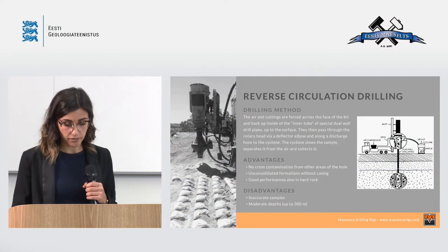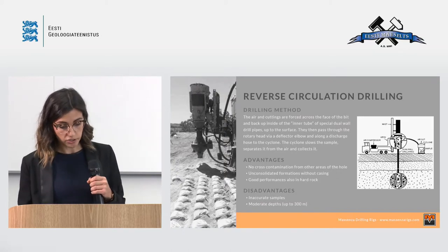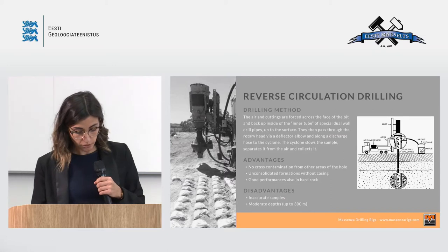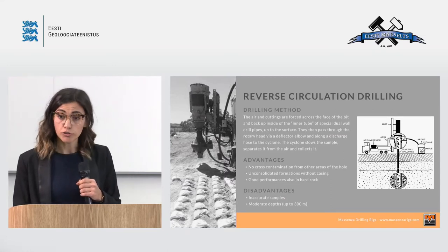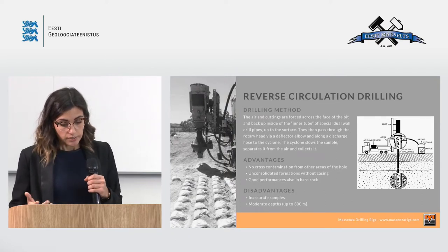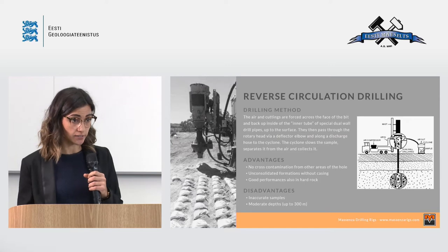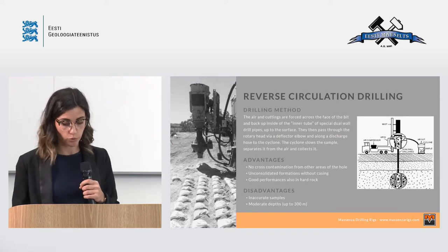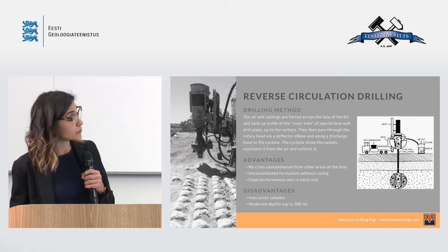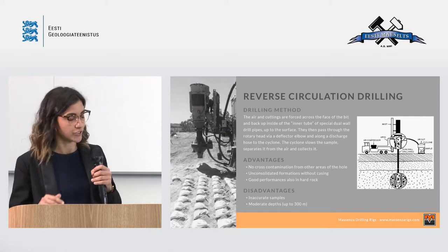The RC — reverse circulation drilling — provides virtually uncontaminated cuttings to the cyclone. Indeed, as the cuttings travel from the bit through the steel inner tubes and sample holes, there is no cross-contamination from other areas of the hole. The RC is also possible in unconsolidated formations without casing most of the time, and it has good performance in hard rock formations. The disadvantages are that these rock chips are less accurate and detailed than a core barrel in a coring system. Also, it can reach only moderate depths — about 300 meters deep.